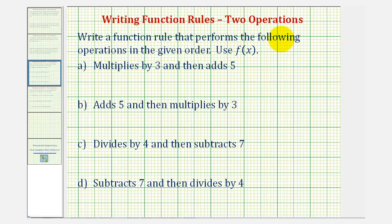We want to write a function rule that performs the following operations in the given order, and we're asked to use f(x) for our function. So for part a, our function multiplies by three and then adds five.